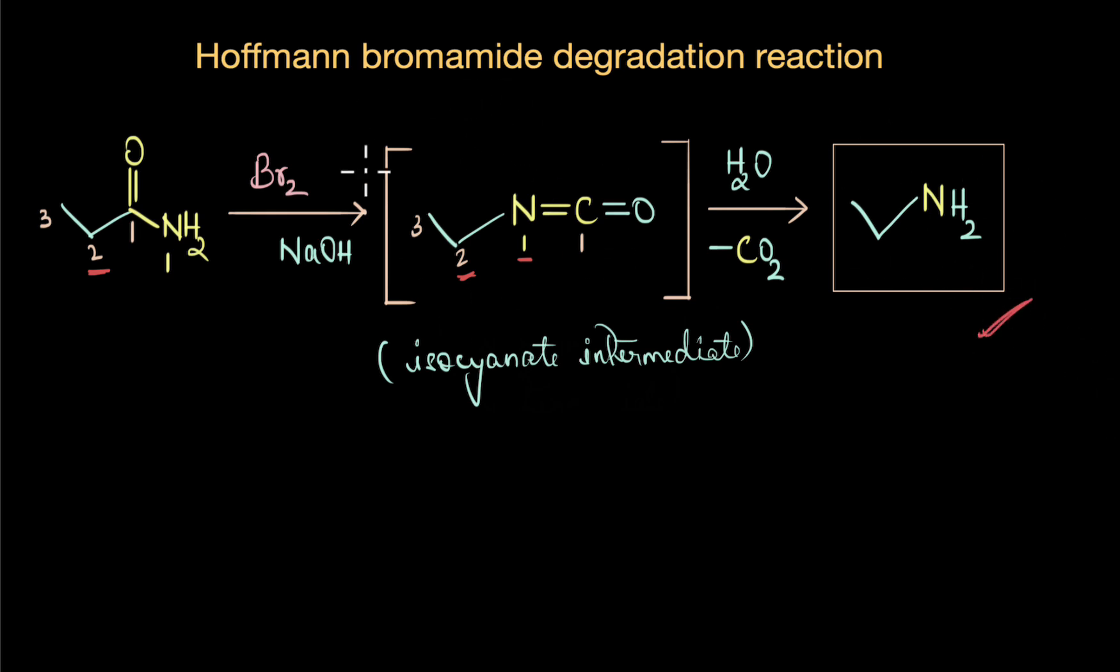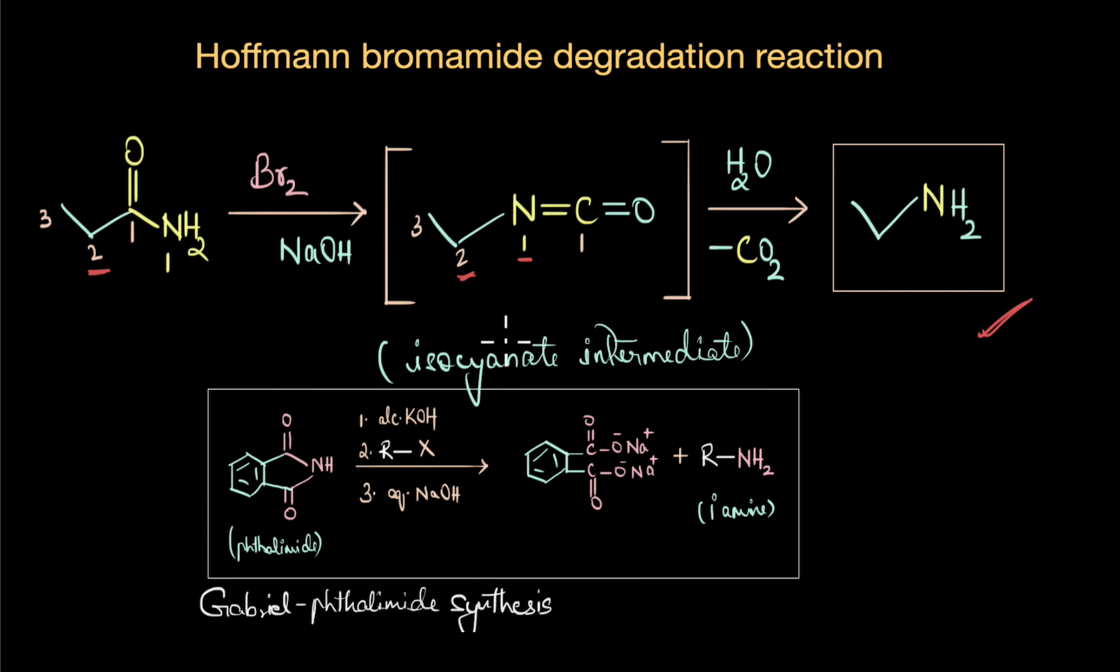The advantage of Hoffmann bromamide reaction as compared to Gabriel phthalimide synthesis is that we can also synthesize primary aryl amines and also primary amines with tertiary alkyl groups, which would not be possible using the Gabriel phthalimide synthesis. That is essentially an SN2 reaction, and aryl halides and tertiary alkyl halides are very poor substrates for SN2 reaction. But Hoffmann bromamide reaction has no such SN2 constraints. It does not go through a nucleophilic substitution reaction.